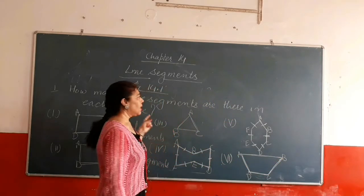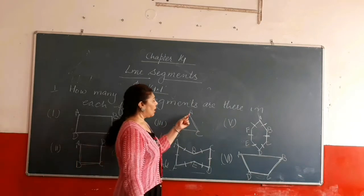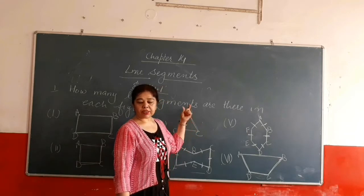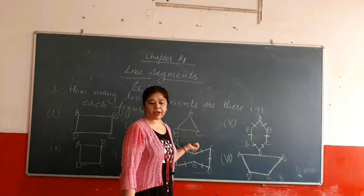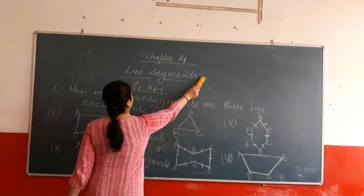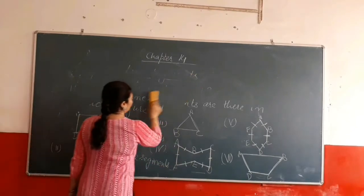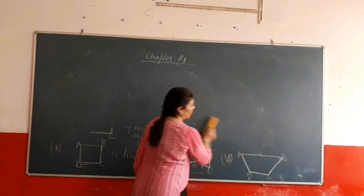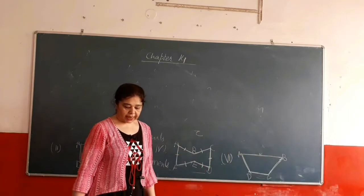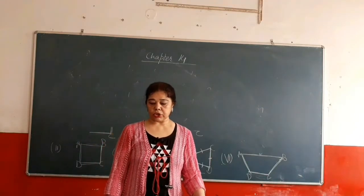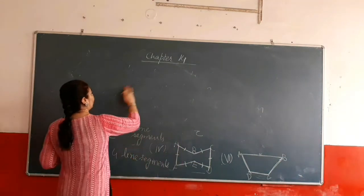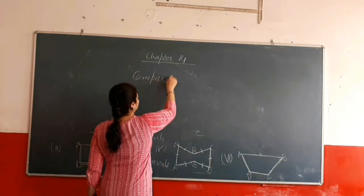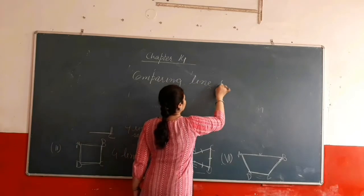So what we come to know in this exercise is that a line segment is a straight line between two points. This was exercise 14.1. In the next exercise, what will we do? We will compare the line segments — we will see which line is long and which is short.